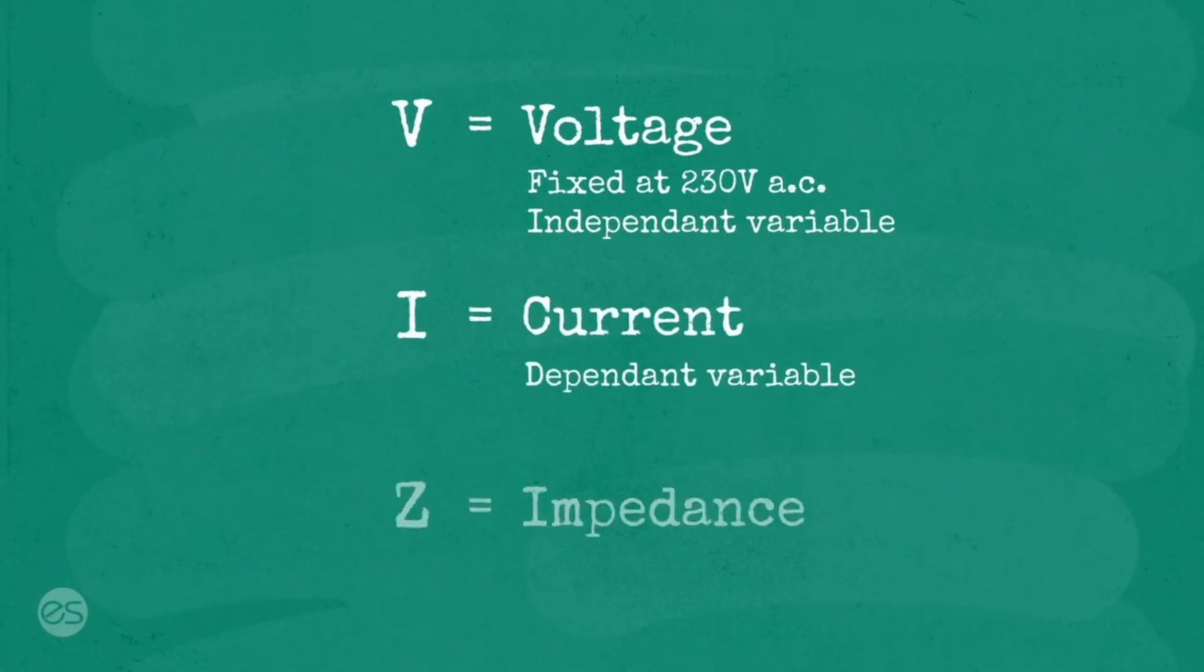Total earth fault loop impedance is approximately equal to the sum of impedances of all the circuit components.